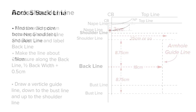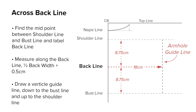The across back line. Find the midpoint between the shoulder line and bust line. Square across a guide line and label it the back line. Measure along the back line half the back width plus 0.5 centimeters. From this point, square down to the bust line and up to the shoulder line. This is the armhole guide line.